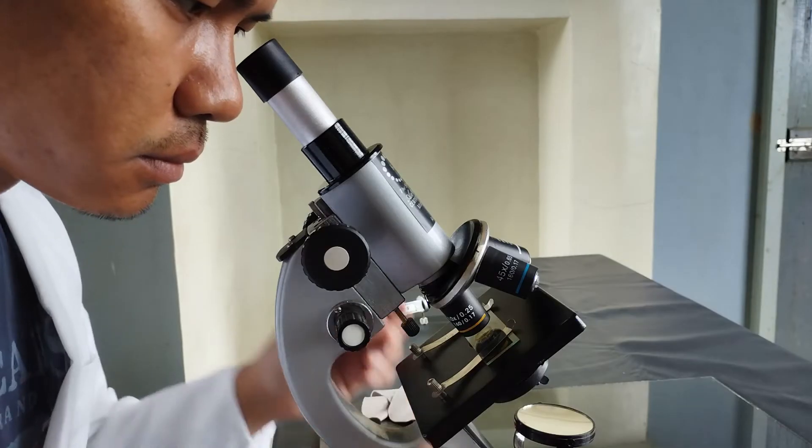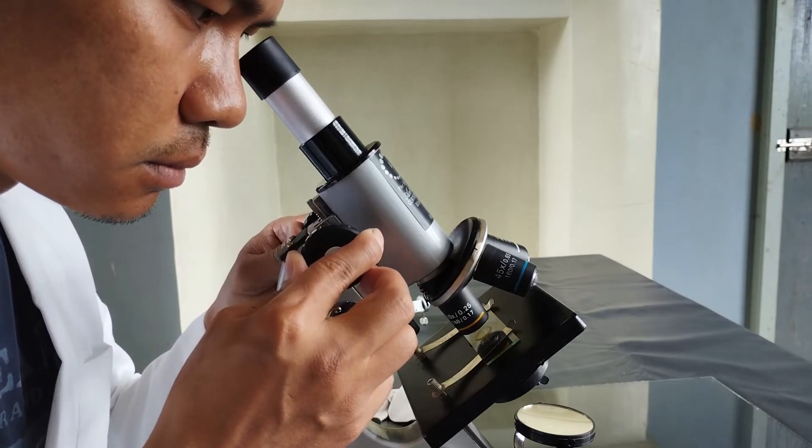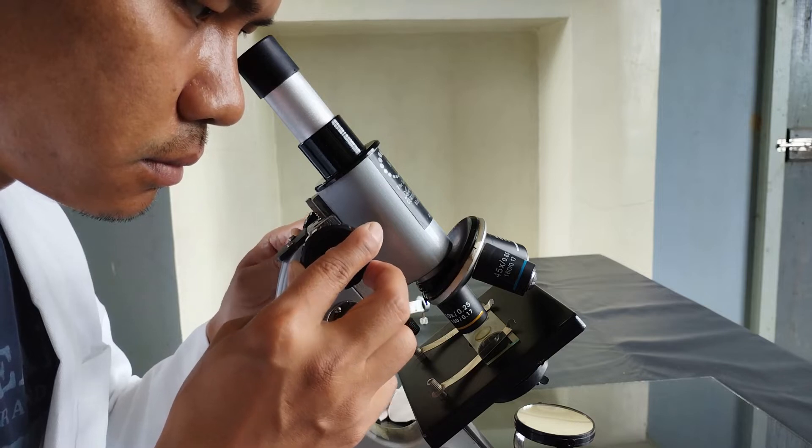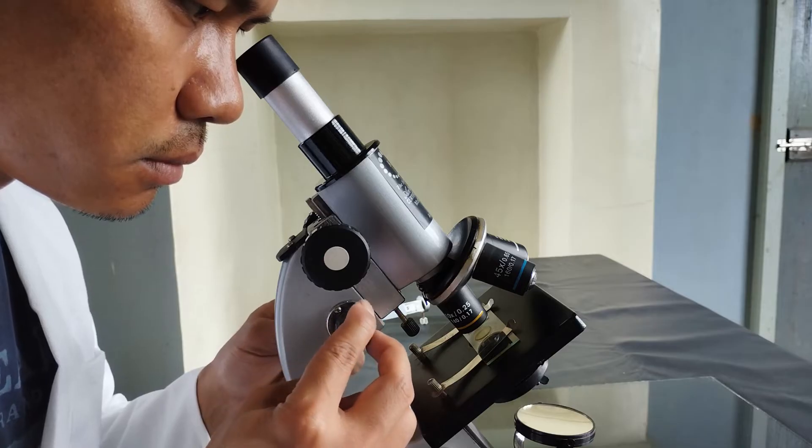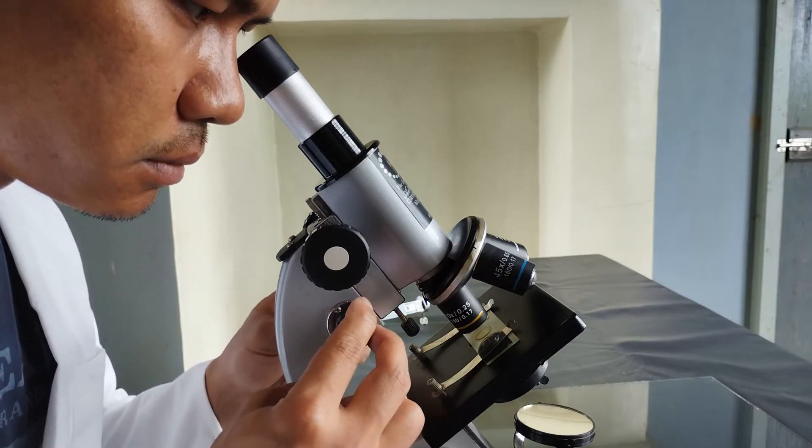Then carefully rotate the coarse adjustment knob counterclockwise until the specimen becomes visible and is more or less in focus. Once the specimen comes into view, use only the fine adjustment knob to bring the specimen into sharp focus by rotating the fine adjustment knob clockwise or counterclockwise.